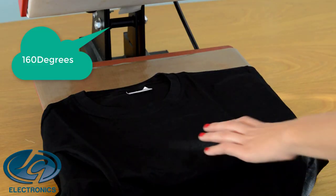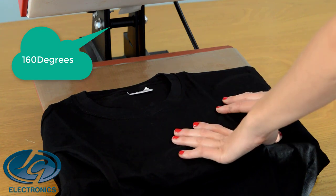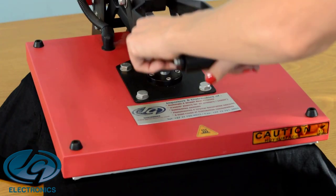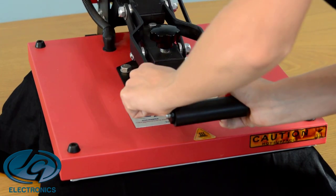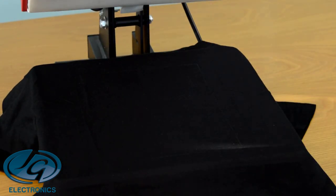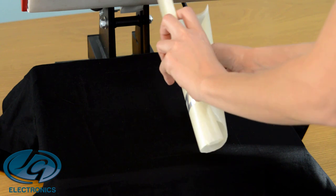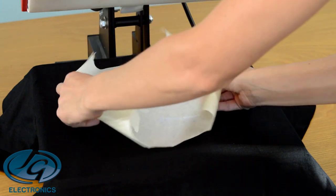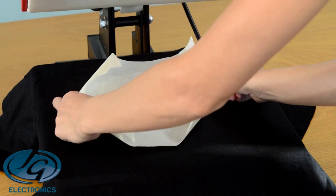Let your press cool down to 160 degrees, and then we're going to put your shirt on top. I'm just going to pre-press it to get rid of all the wrinkles. Now we're going to take this and put it on top of your shirt. Line it up in the middle.